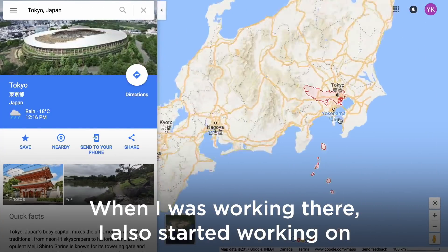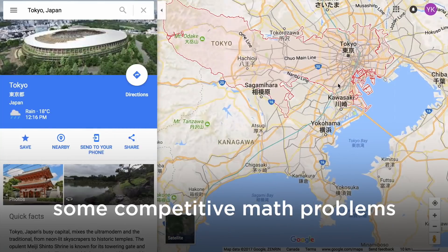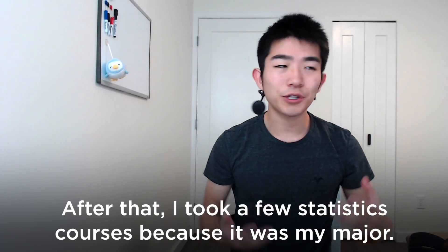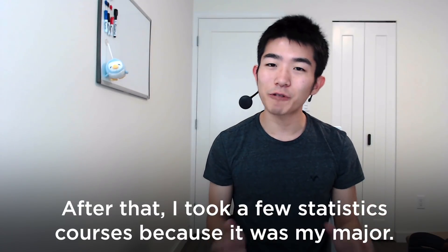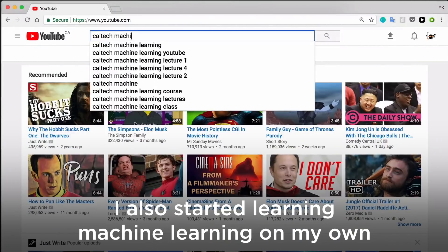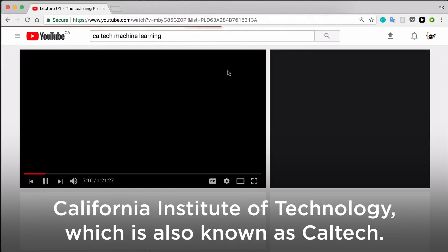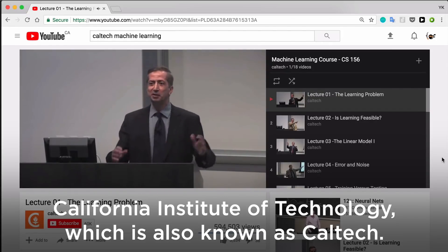When I was working there, I also started working on some competitive math problems just for fun. After that, I took a few statistics courses because it was my major. I also started learning machine learning on my own by taking an online course from California Institute of Technology, which is also known as Caltech.